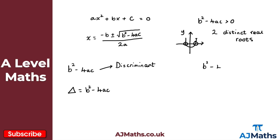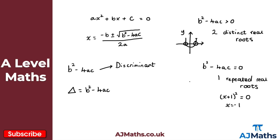The second case: when b squared minus 4ac is equal to zero, we have one repeated real root — sometimes called an equal real root. For example, a quadratic like (x plus 1) squared equals zero gives one root at x equals minus one. Graphically, the curve just touches the x-axis at that single point.